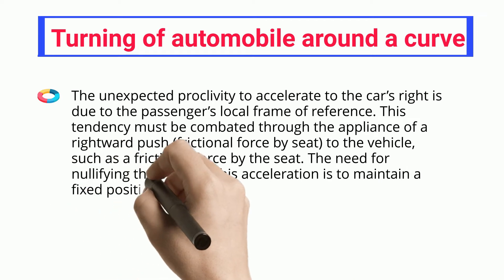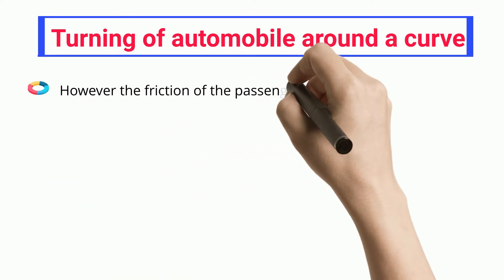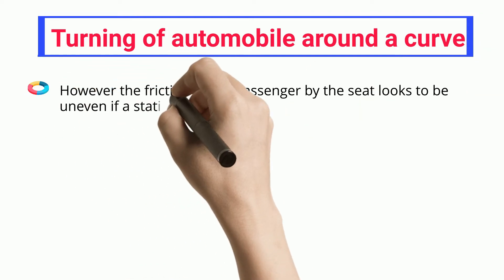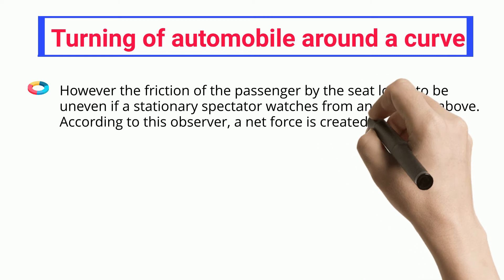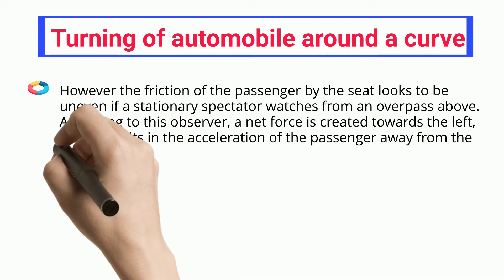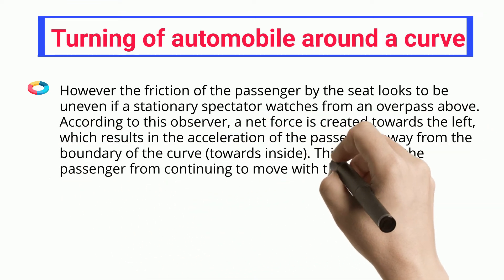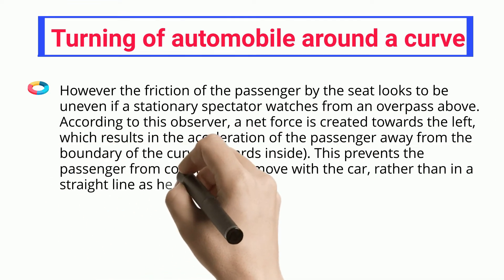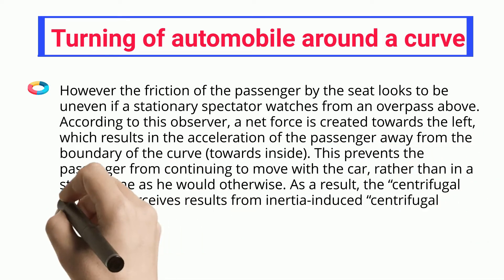The frictional force by the seat is needed to nullify the effect of this acceleration and maintain a fixed position within the car. However, this friction appears uneven if a stationary spectator watches from an overpass above. According to this observer, a net force is created towards the left, resulting in the acceleration of the passenger away from the boundary of the curve towards the inside, preventing him from continuing in a straight line.